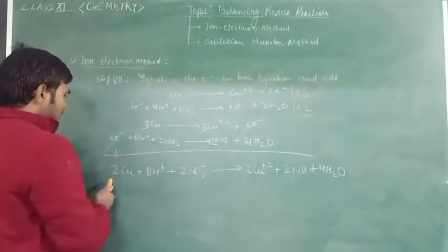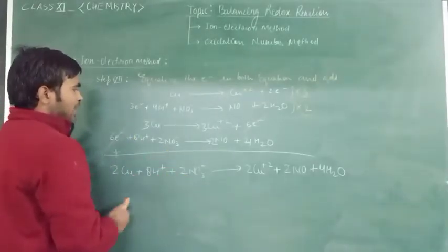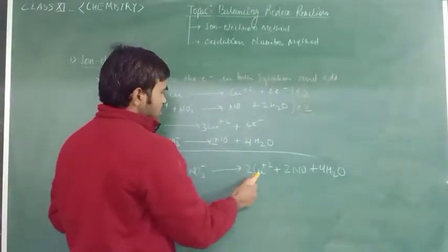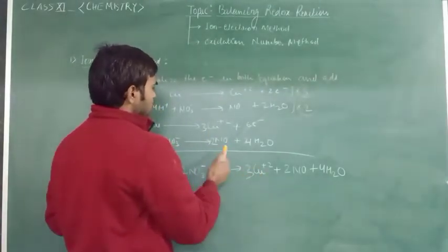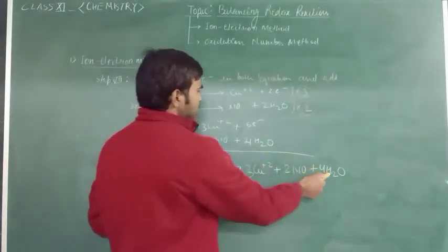it will be 3Cu plus 8H⁺ plus 2NO3⁻ gives 3Cu²⁺, and after that, it is 2NO and 4H2O.